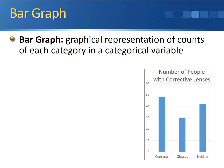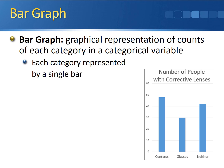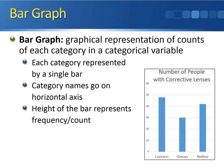Now we'll look at graphical ways of displaying categorical data. The most common is a bar graph, defined as a graphical representation of the counts of each category in a categorical variable. Each category is represented by a single bar — contacts, glasses, and neither each get their own distinct bar. Be sure to label the bars with category names on the horizontal axis. The height of each bar represents the frequency or count for each category.